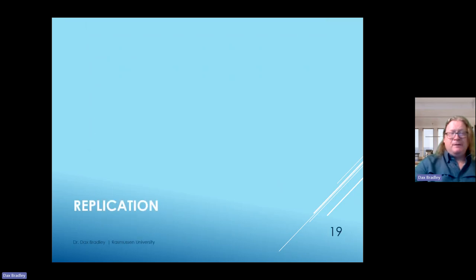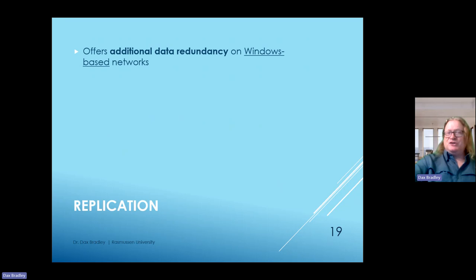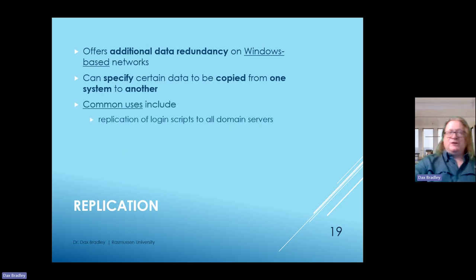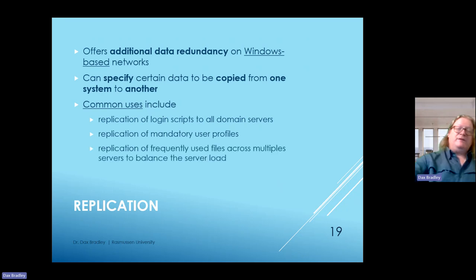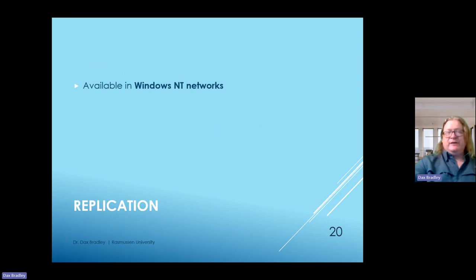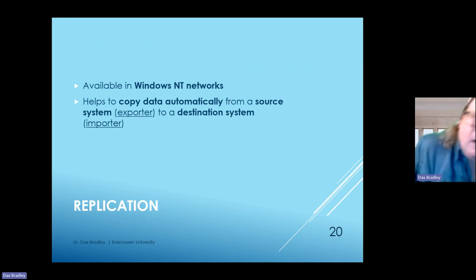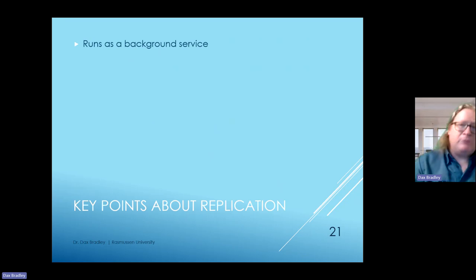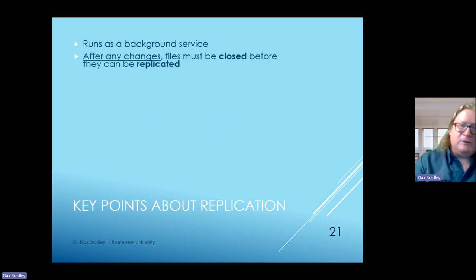In replication, we're offering the advantage of data redundancy on Windows-based networks, and it can specify certain data to be copied from one specific system to another. Common uses include replication of login scripts to all domain servers, replication of mandatory user profiles, and replication of frequently used files across multiple servers to balance the server load. Replication in Windows NT helps copy data automatically from a source—called an exporter—to a destination called an importer, and it should be run after any changes.